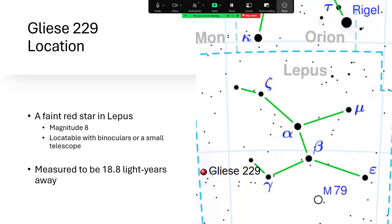Magnitude 8, so you can't see it with the naked eye. In fact we can't see any red dwarf stars with the naked eye, but you will be able to find it with binoculars or a small telescope using the star map. And it's one of the sun's near neighbors at just under 19 light years away from Sol.